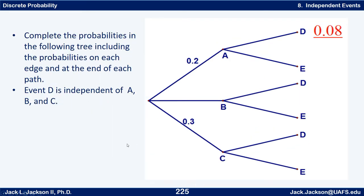For the next tree, let's assume D is independent of A, B, and C, which means E — being essentially just not-D — is also independent. This time we're given the value 0.08.